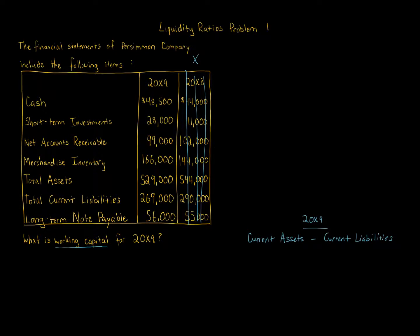We go through all items and determine which are current assets and which are current liabilities. Cash — yes, current asset. Short-term investments — yes, current asset. Net account receivable — yes, current asset. Merchandise inventory — yes, current asset. Total assets is not used directly, since it can also include property, plant and equipment, intangible assets, goodwill, and long-term receivables. Total current liabilities are given as $269,000 — that's our current liabilities figure.